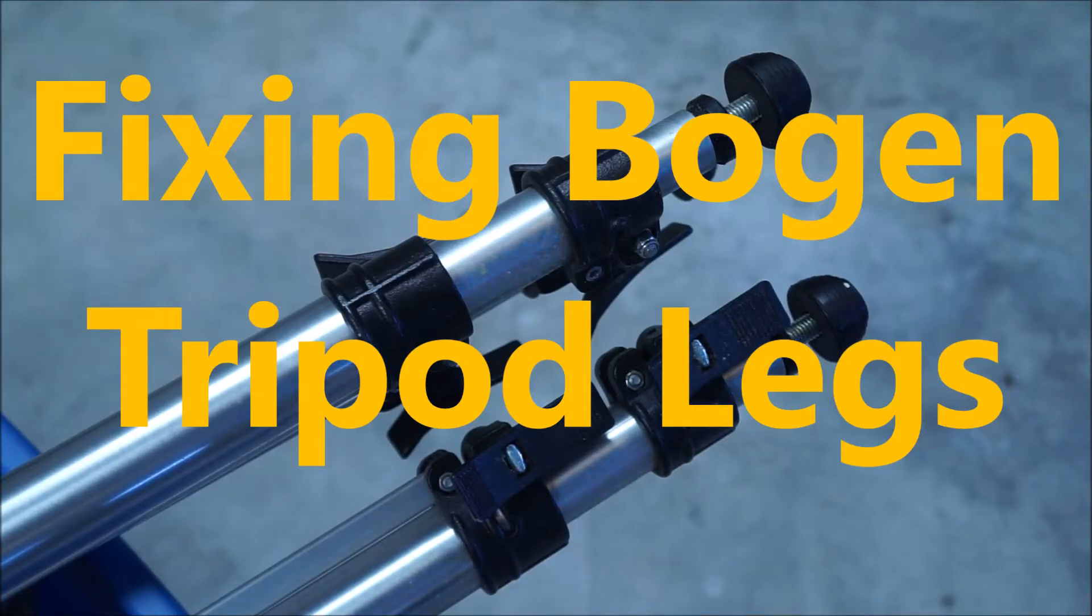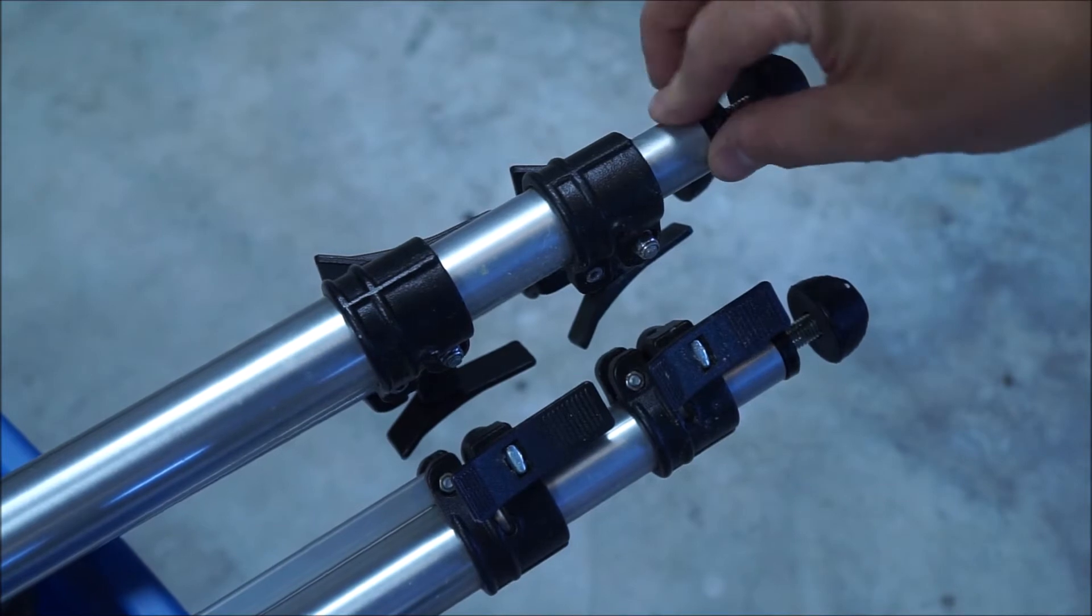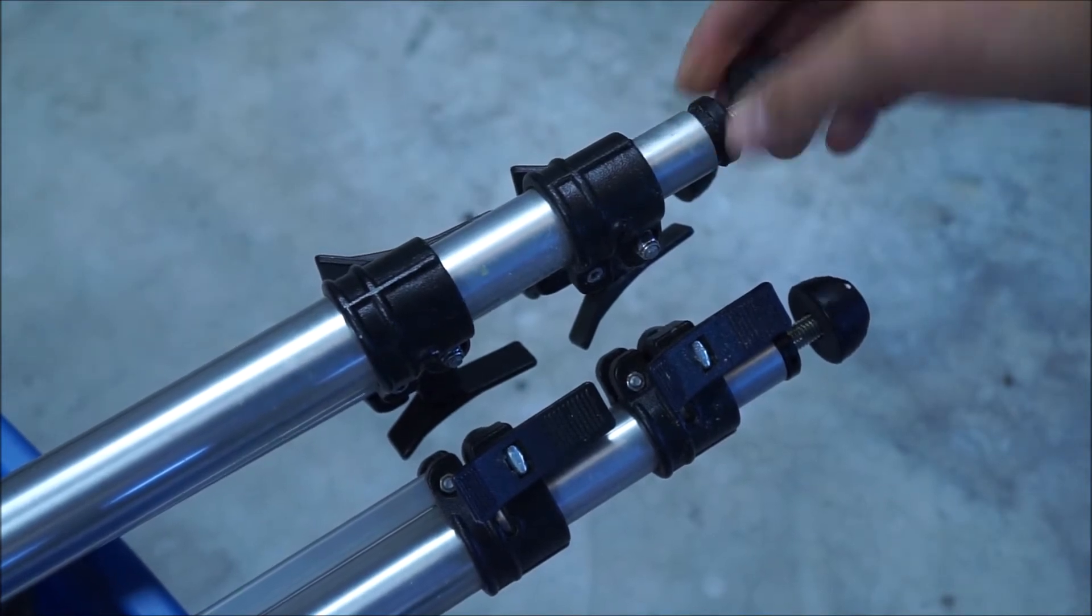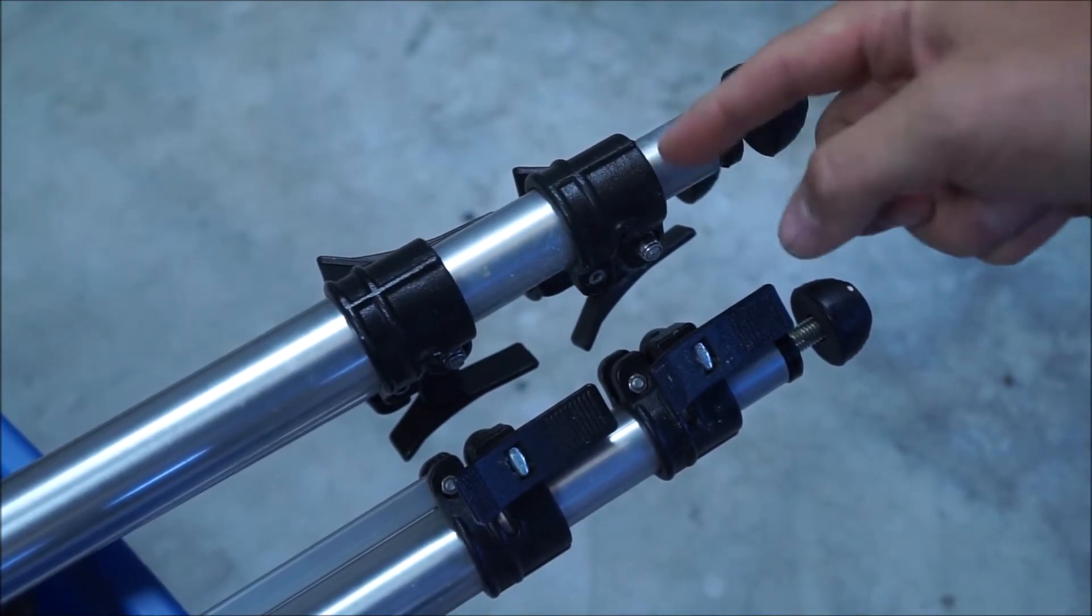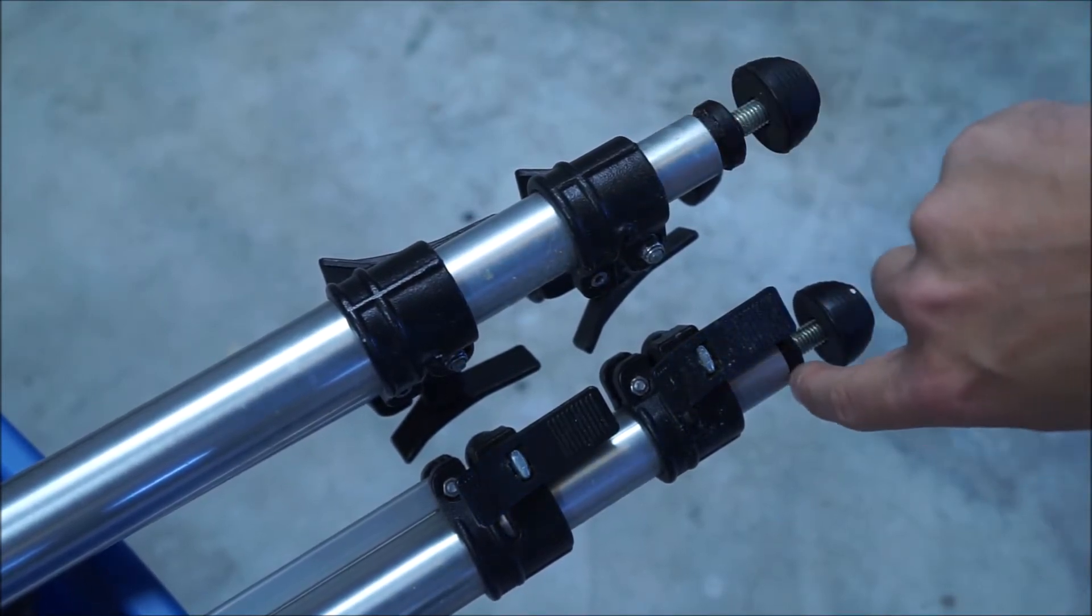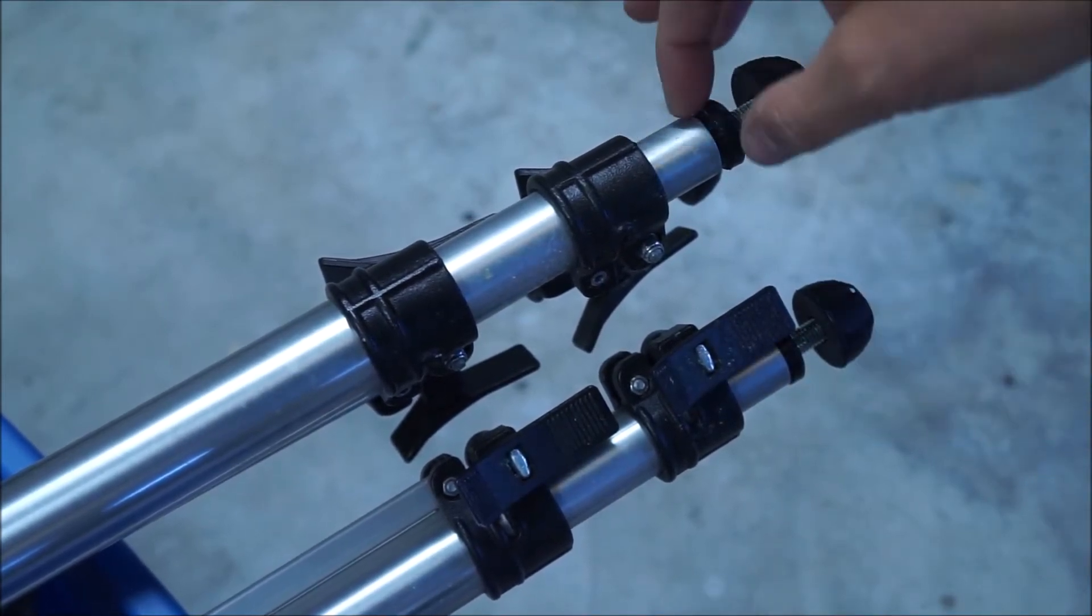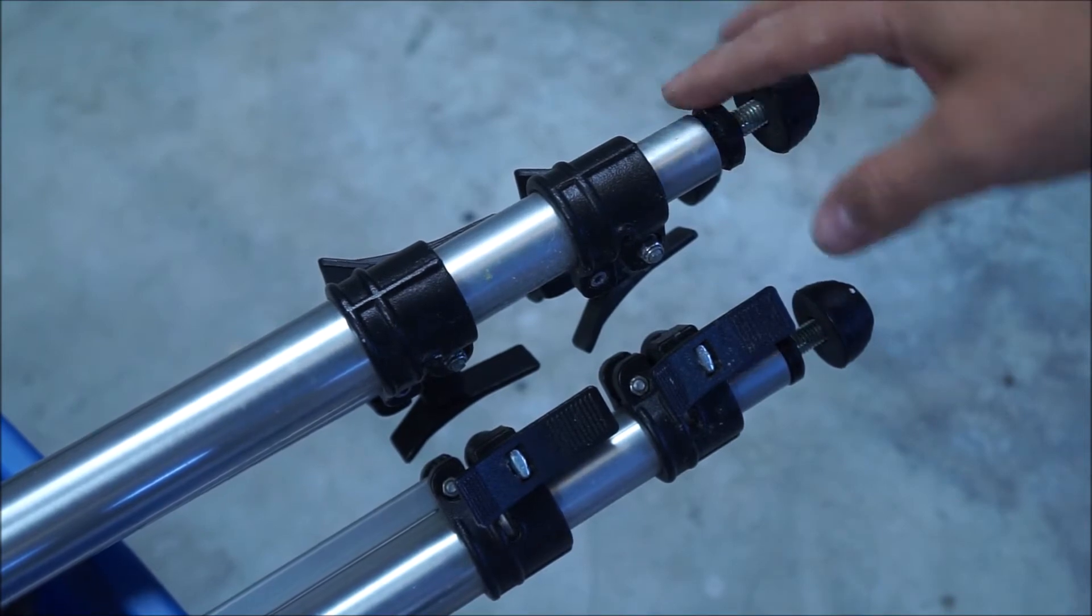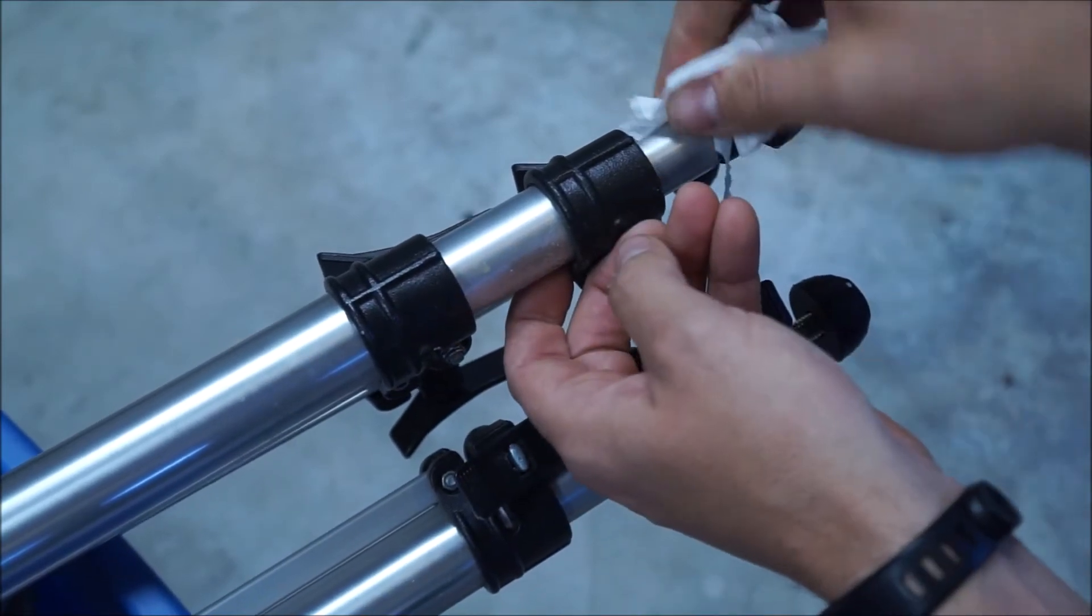On my old Bogen tripod legs, I've got this little gap here between the foot and the lower leg assembly. It should be basically flush, but there's maybe like a quarter inch gap. The trick I find is to hammer it back in.